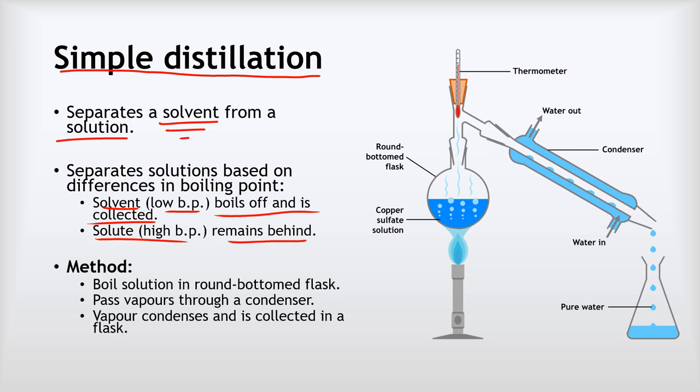It works like this: we start with our solution boiling in a round bottom flask—in this case we've got a solution of copper sulfate dissolved in water. As that boils, the water vapor boils first because the water's got a lower boiling temperature, and the water vapor passes through the apparatus into this equipment here which we call a condenser.